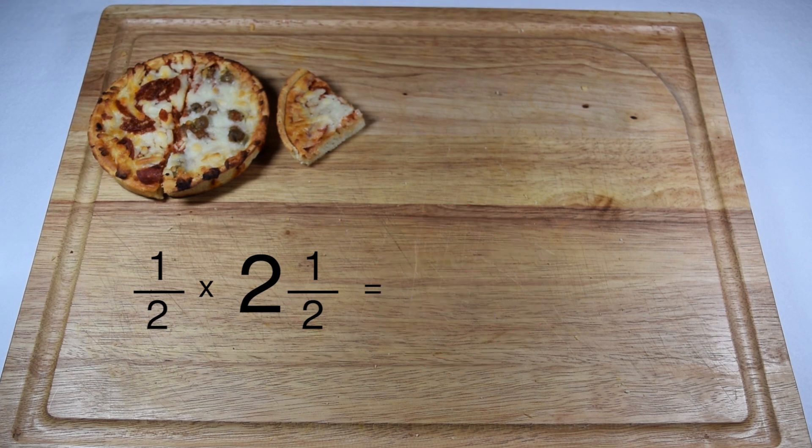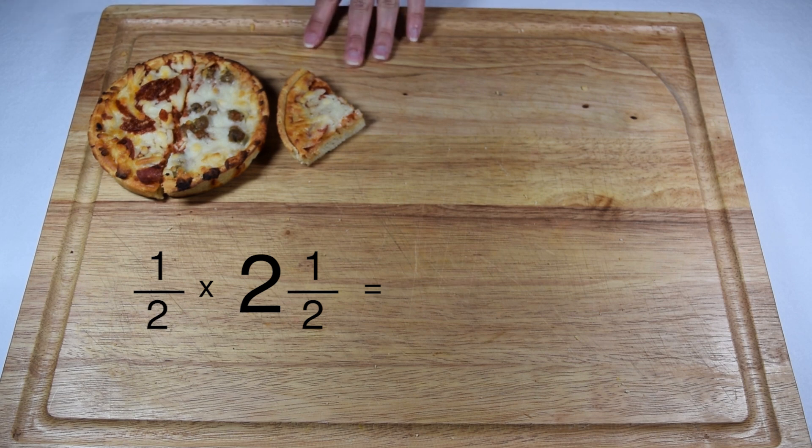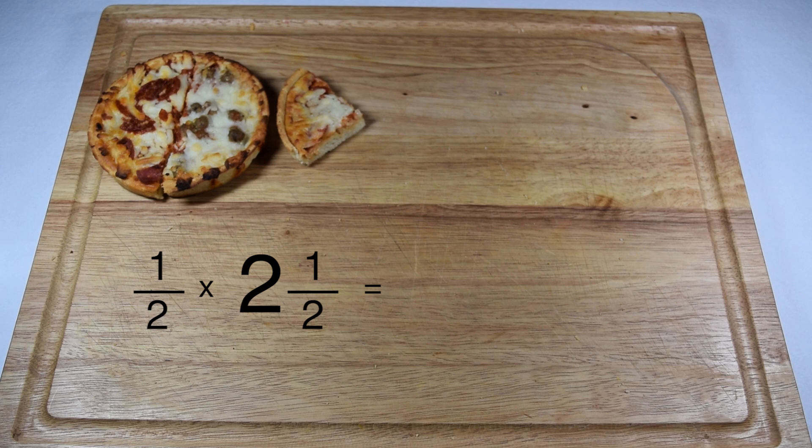First thing we need to do is take that two and a half and make that two part of the fraction again. So we need to change our mixed number into an improper fraction. To do that, I'm going to multiply the denominator of two times the whole number of two to give me four pieces, plus my numerator of one to give me five over two total.